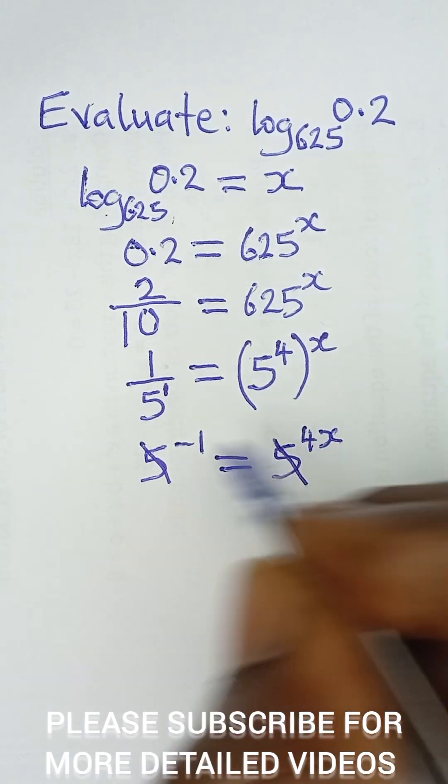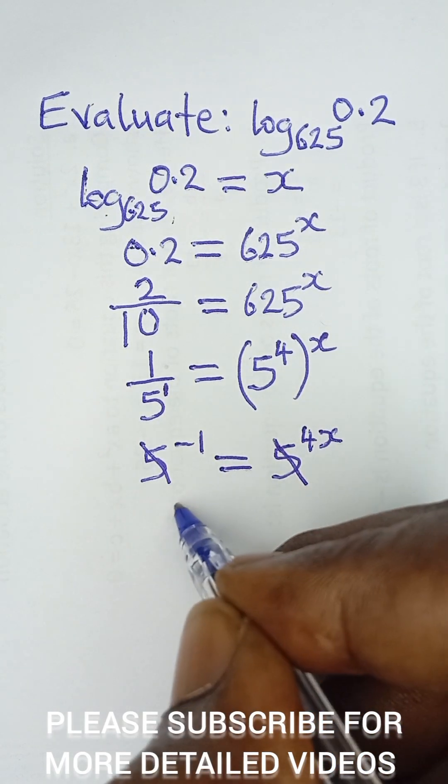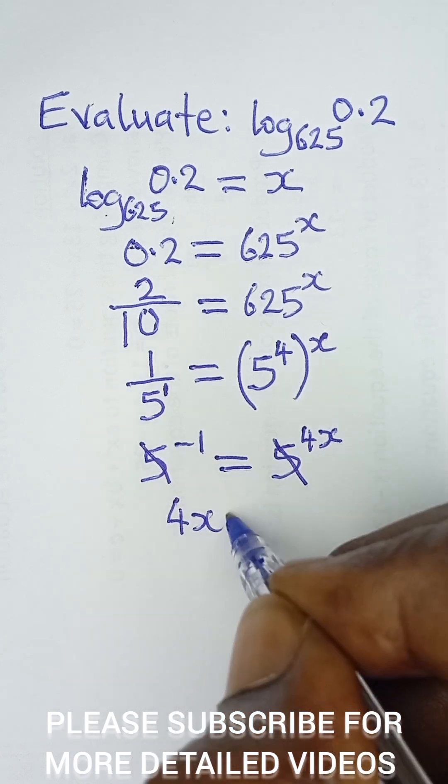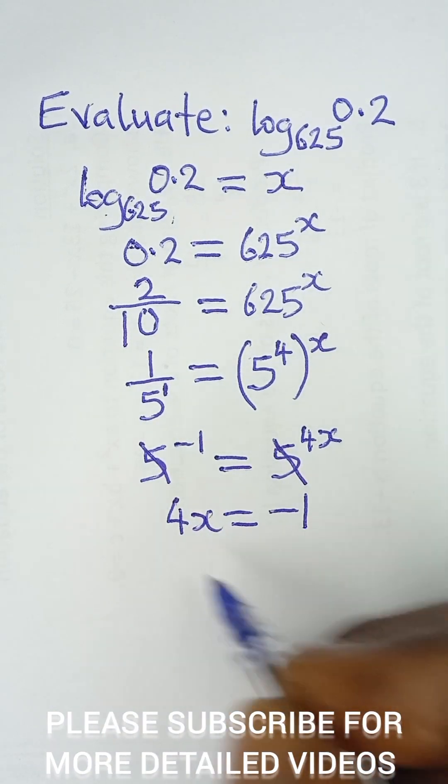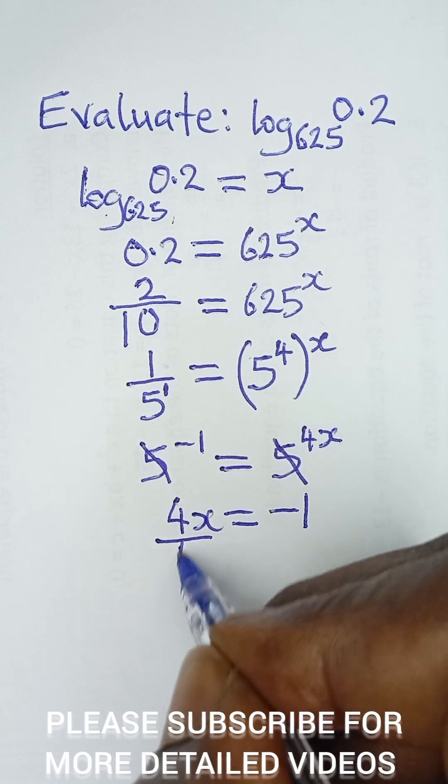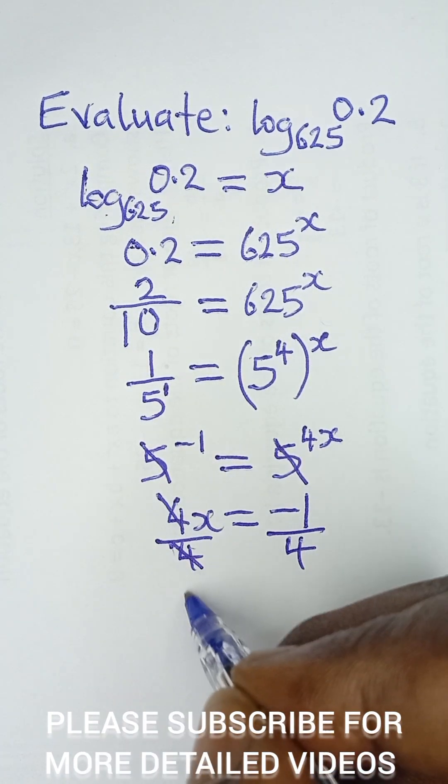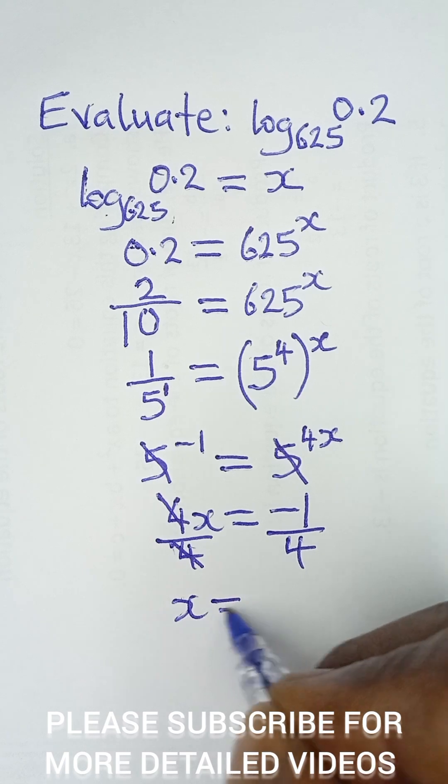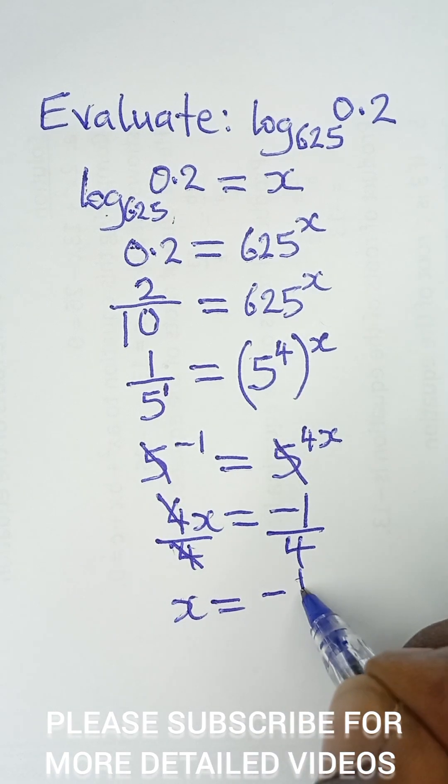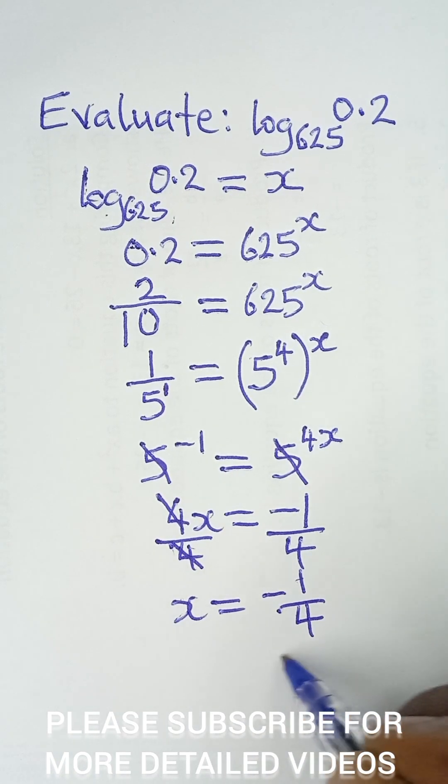So I can try to write 4x first, so I say 4x is equal to negative 1, and then I divide both sides by 4. So this divide by 4 and this divide by 4, this cancels 4.